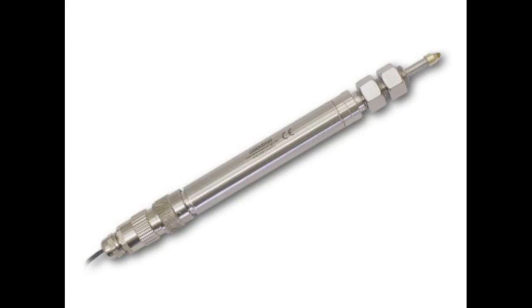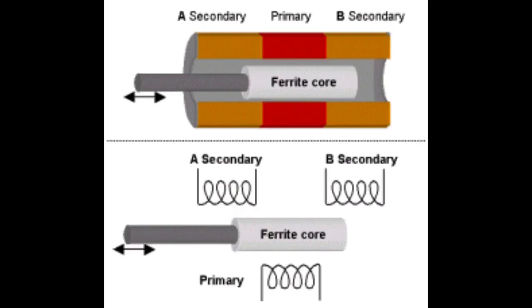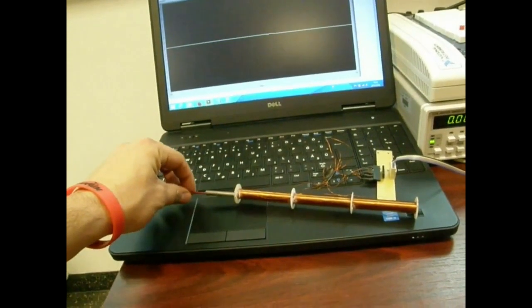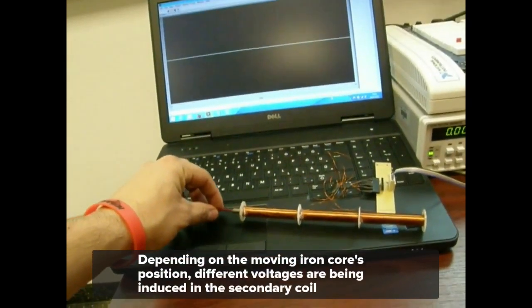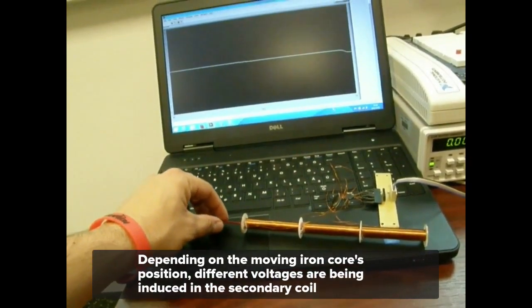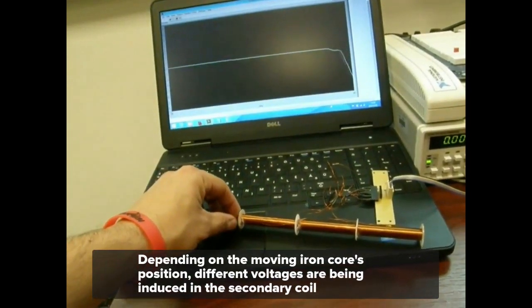LVDT stands for Linear Variable Differential Transformer. An LVDT has three coils, two secondary and one primary, and the primary coil is usually excited with an alternative current. Depending on the moving iron core's position, different voltages are being induced in the secondary coil.